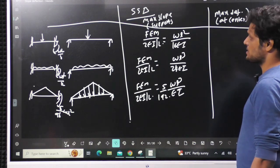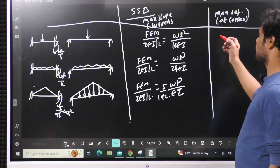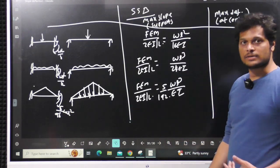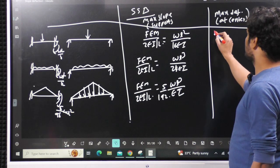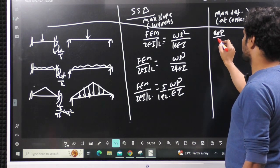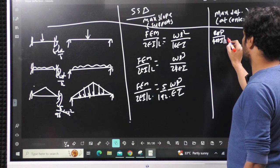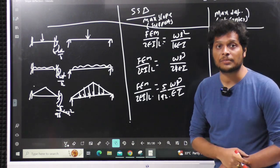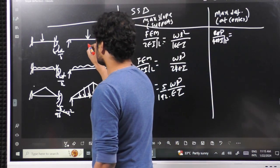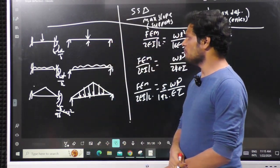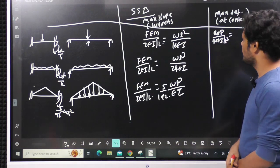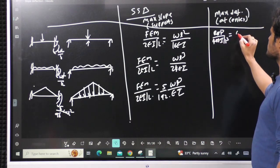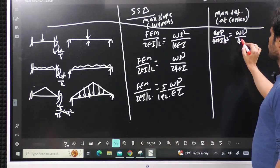Next, maximum deflection at the center for SSB. The formula is: reaction of prop divided by (48EI/L³). The prop must be placed at the center. For a point load W applied at the center, the entire load W goes to the prop, so the reaction is W, giving deflection = WL³/48EI.